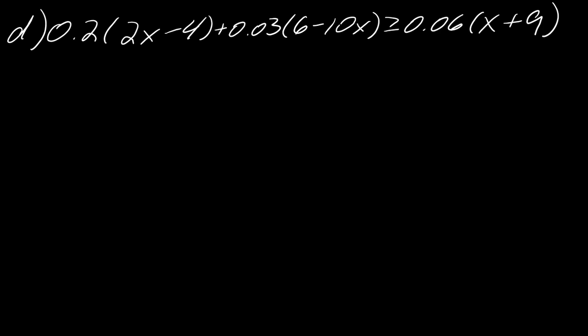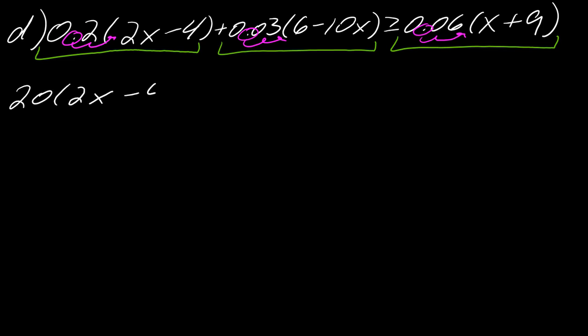Now for the last one. So same idea here with clearing your decimals and still with that idea of working with parts. So this would be a part, this would be a part, and this would be a part. So I just notice the maximum number of decimal spots, which in this case would once again be 2. So I'm going to move all of these decimals over two spots like this. And I just worry about that in front of the parentheses. So this becomes 20(2x - 4) + 3(6 - 10x). And then this will be 6(x + 9).